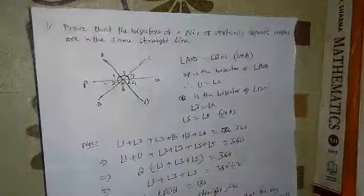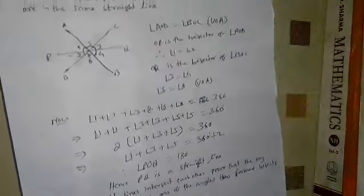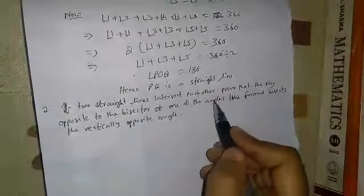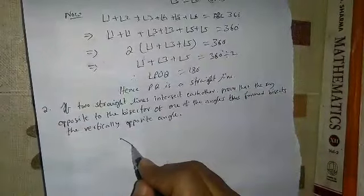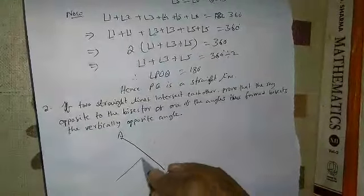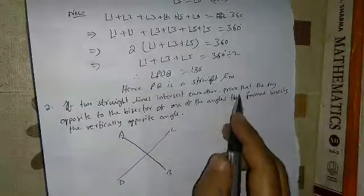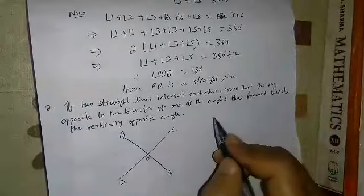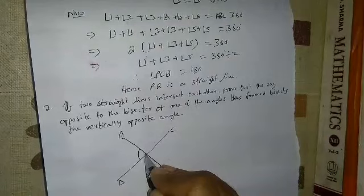Next question: if two straight lines intersect each other — suppose this one is straight line AB and the other one is straight line CD — they intersect each other. We have to prove that the ray opposite to the bisector of one of the angles bisects the vertically opposite angle.